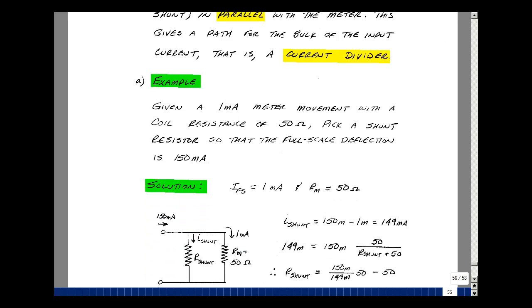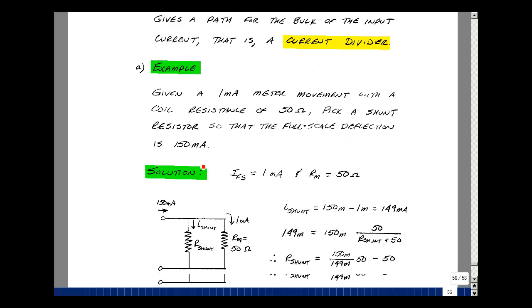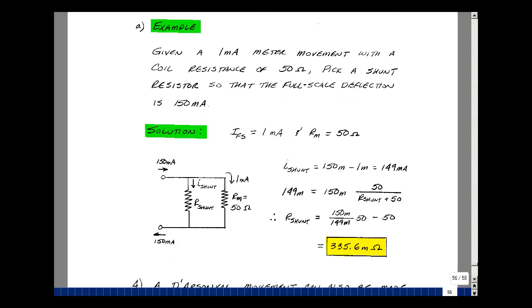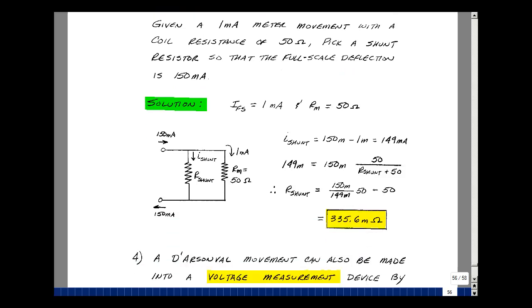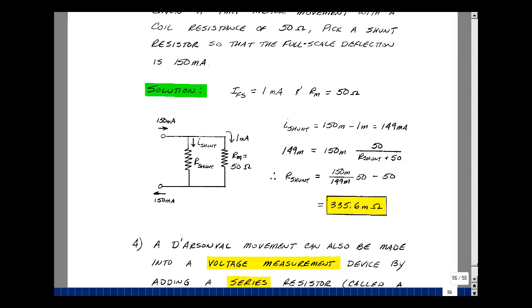Let's do an example. Let's take a 1 milliamp meter movement and suppose that the coil resistance is about 50 ohms. So let's pick a resistor that we'd put in parallel with that meter to get a full-scale deflection not of 1 milliamp, but 150 milliamps. Let's draw a schematic to visualize this.